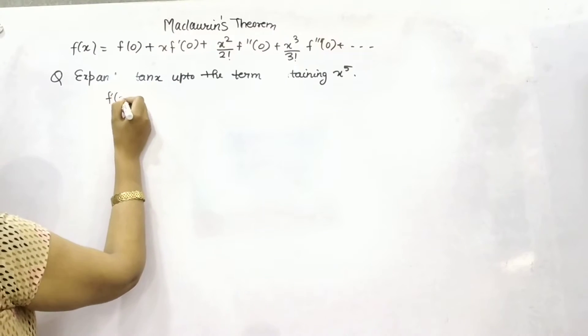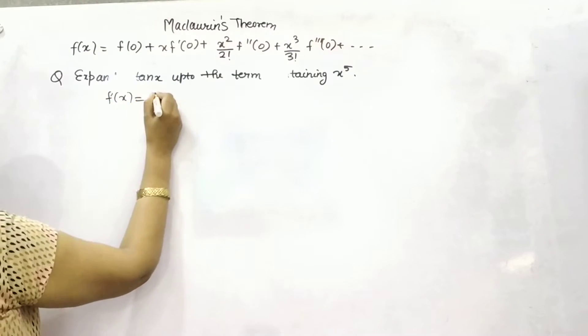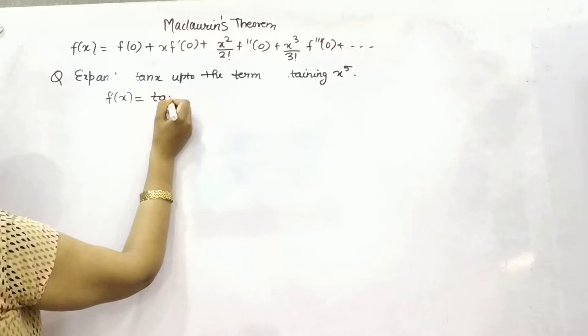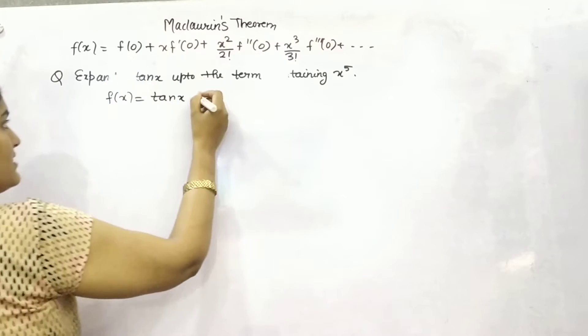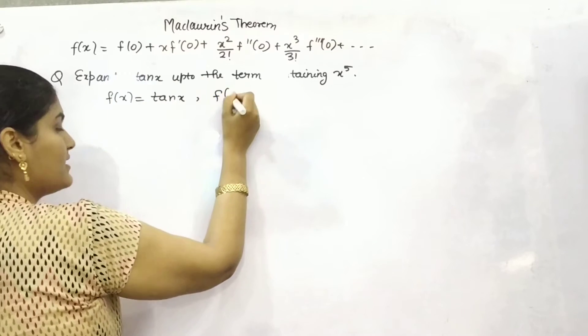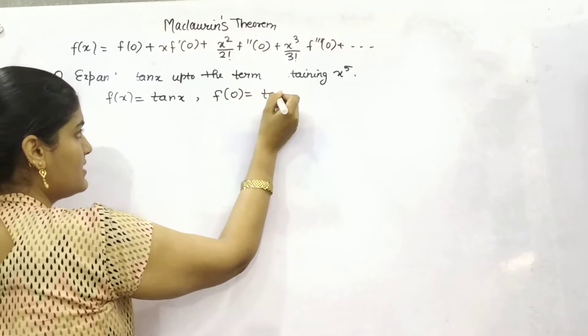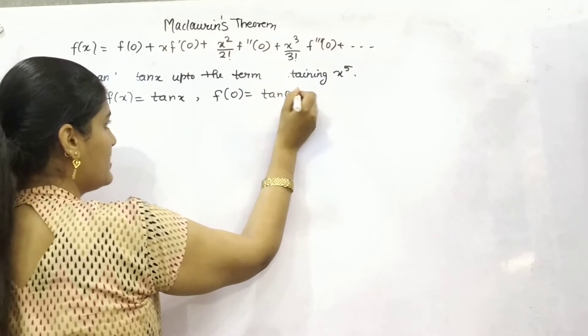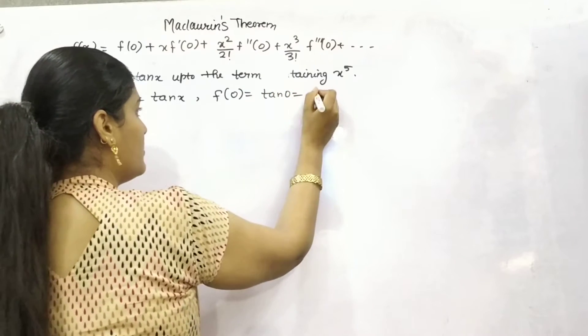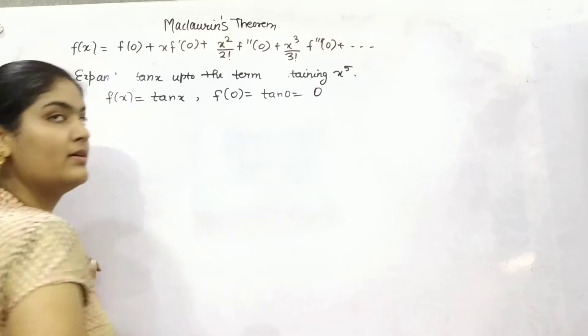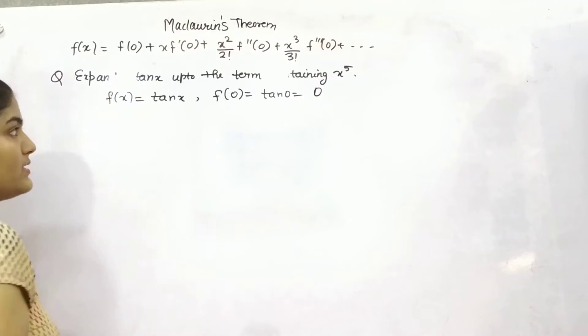Your function is tan(x). At x equals 0, tan(0) is 0.